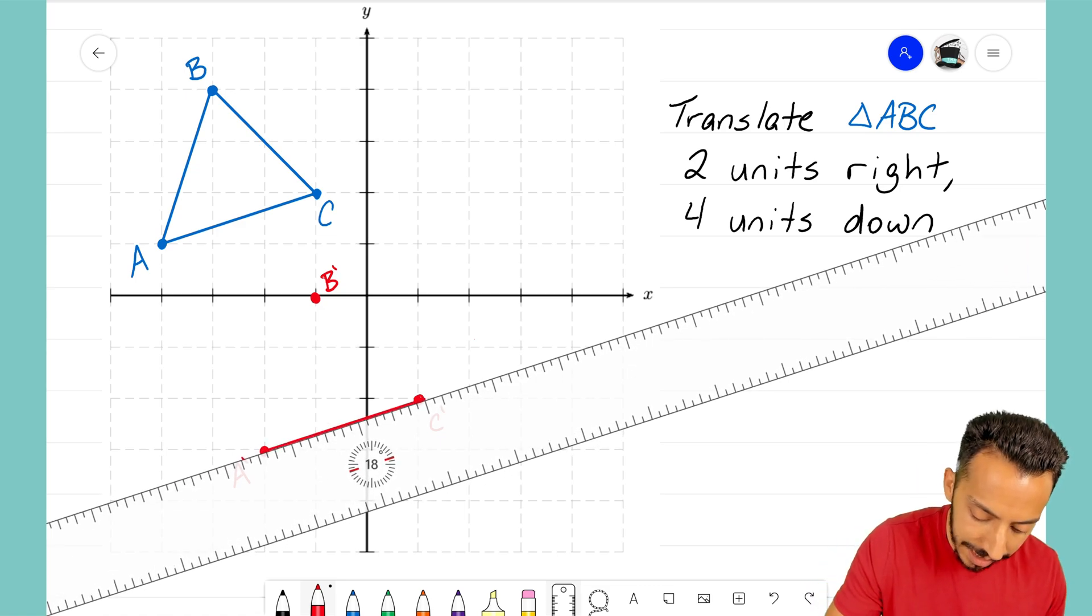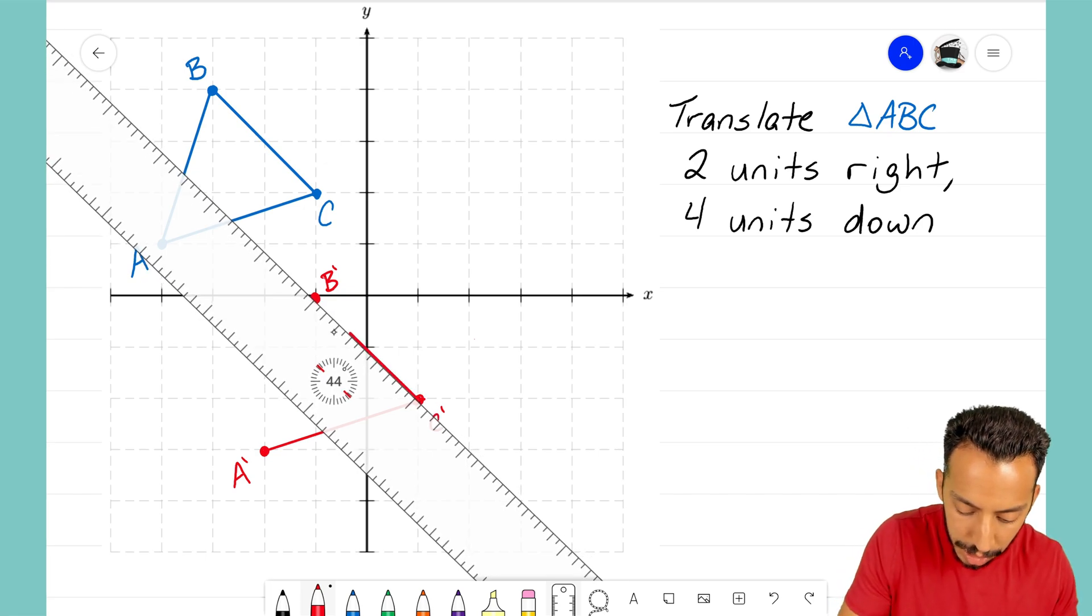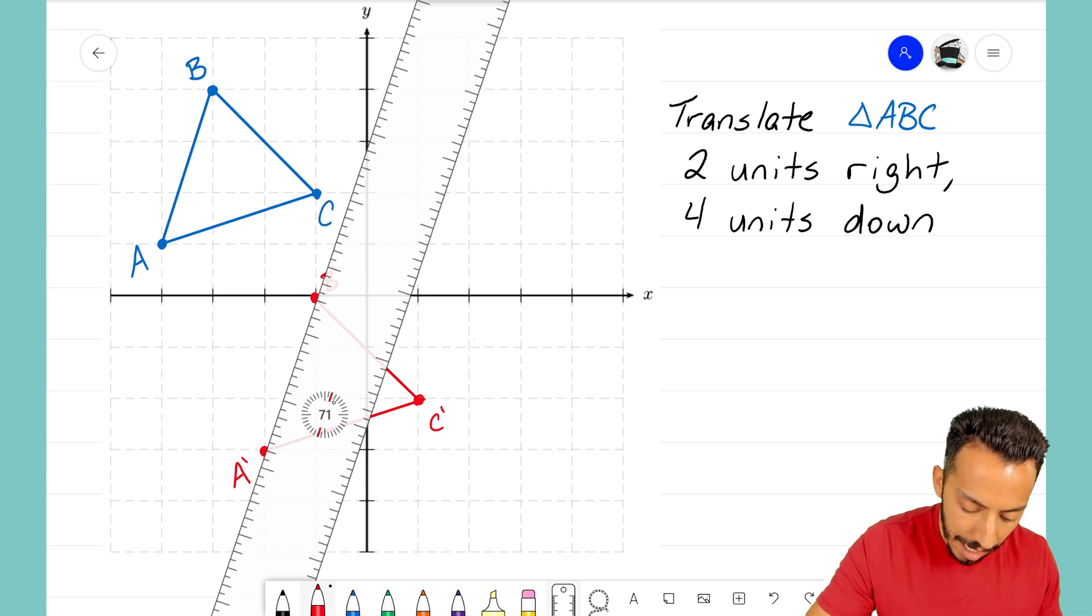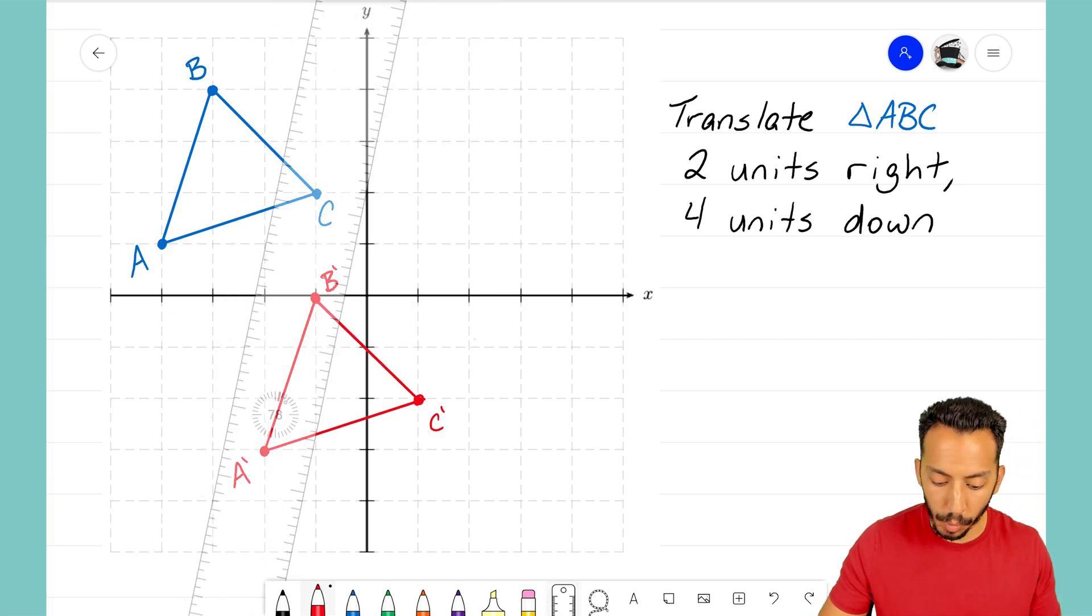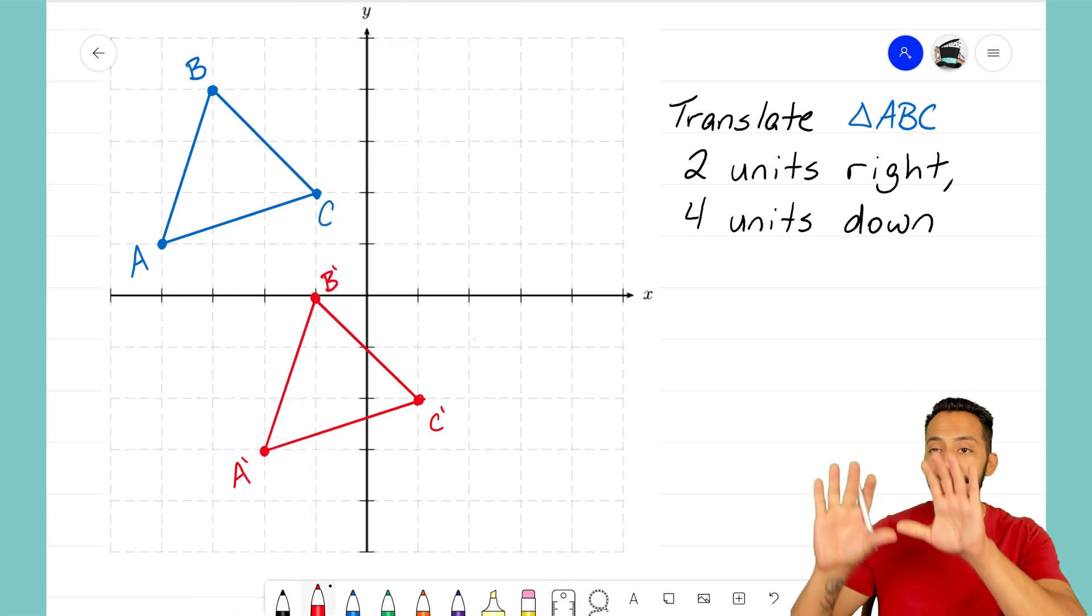Now is the time where I get my ruler out and I get to connect those three dots together to form my new translated triangle. Again, a translated triangle does not mean that we're changing the size, that we're changing the orientation, or where it is. All we're doing here is just taking it and sliding it around.